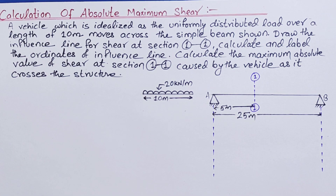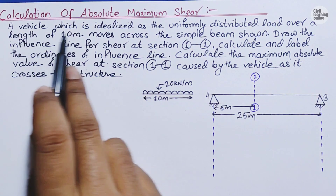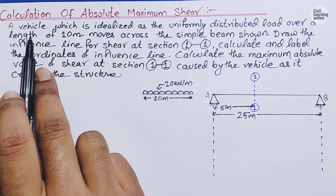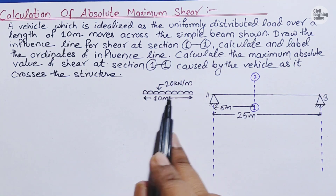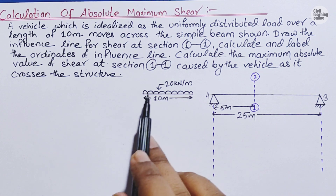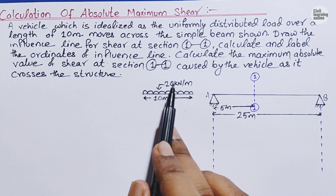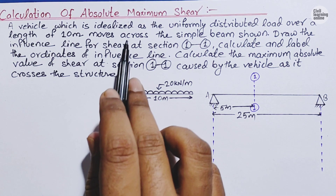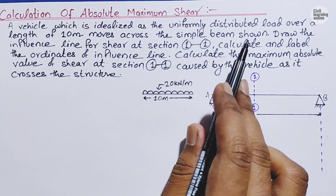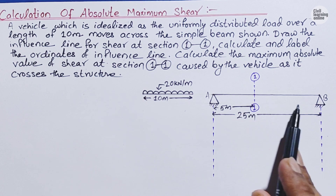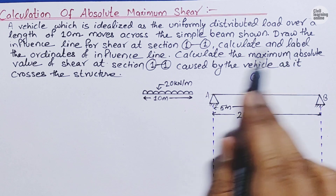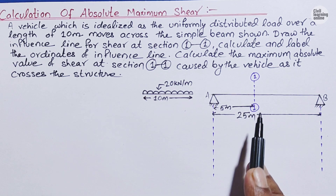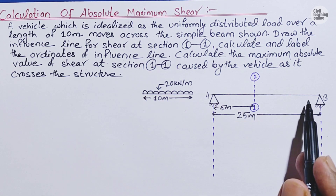Let us read the question first. A vehicle is idealized as a uniformly distributed load of intensity 20 kilonewton per meter over a length of 10 meters. This load moves across the simple beam AB as shown in the figure. We are asked to draw the influence line for shear at section 11.